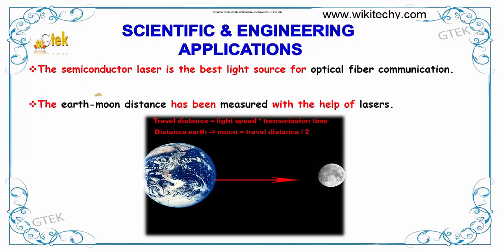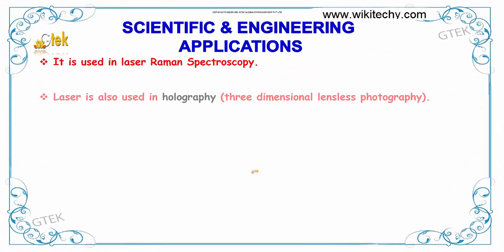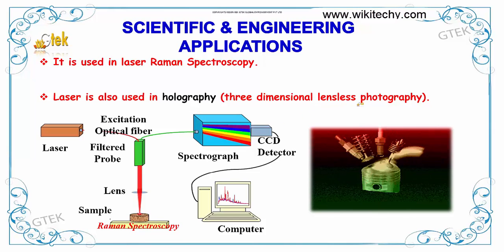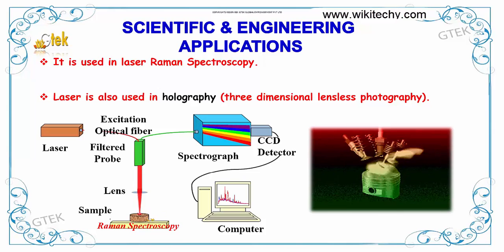In scientific and engineering applications, the semiconductor laser is the best light source for optical fiber communication. Earth-moon distances have been measured with the help of lasers. It is used in laser Raman spectroscopy to see the internal molecular structures using a spectrograph connected to a computer. Laser is also used in holography, which is three-dimensional lensless photography.